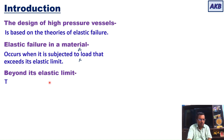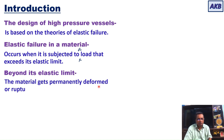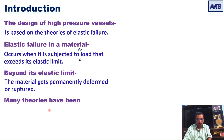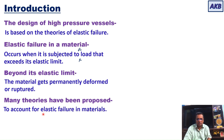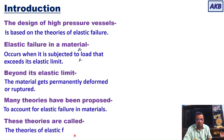Beyond the elastic limit of any material, the material gets permanently deformed or ruptured. That means once the elastic limit of any material is crossed, as you apply increasing loads, the material is going to get permanently deformed or permanently ruptured. Many theories have been proposed in the literature to account for elastic failure in materials, and these theories are called the theories of elastic failure.